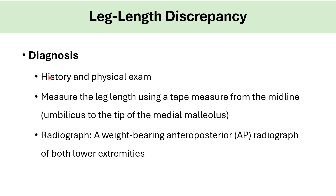Diagnosis of leg length discrepancy comes from history and physical examination. You can measure the leg length using a tape measure from the midline, from the umbilicus to the tip of the medial malleolus. Radiograph: you can order a weight-bearing anteroposterior AP radiograph of both lower extremities.